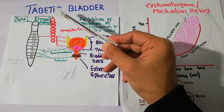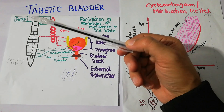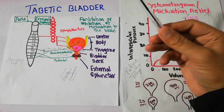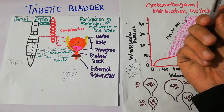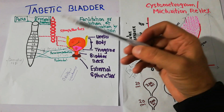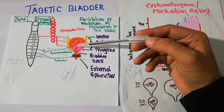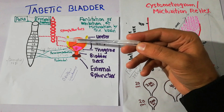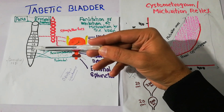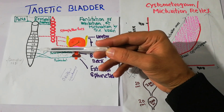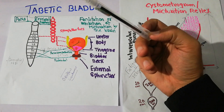Taptic Bladder is basically a type of Atonic Bladder. As we discussed previously in Atonic Bladder, the nerve fibers which take sensation from the urinary bladder towards the spinal cord — if they are damaged, it results in Atonic Bladder.